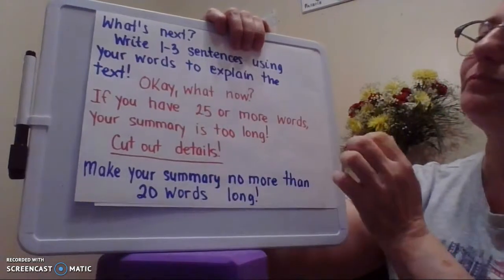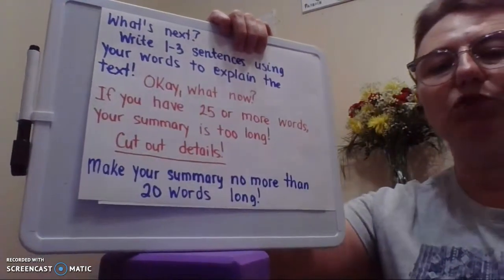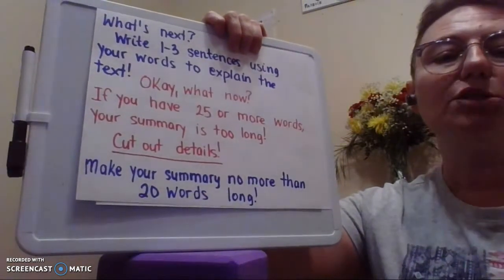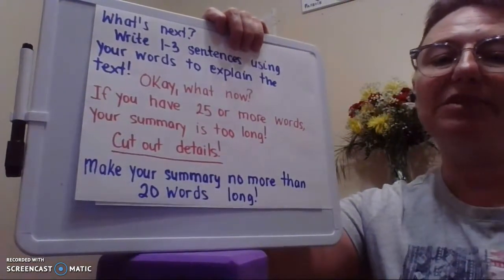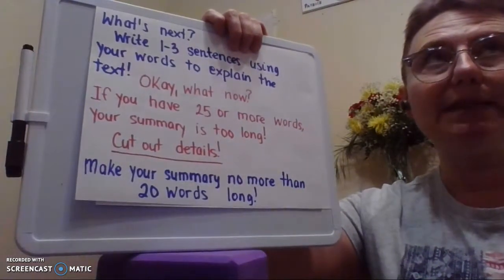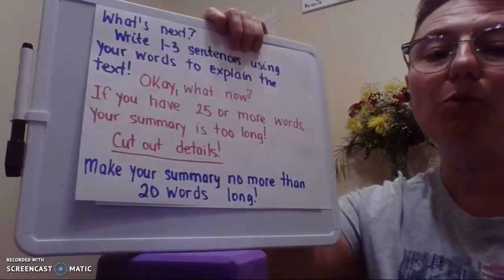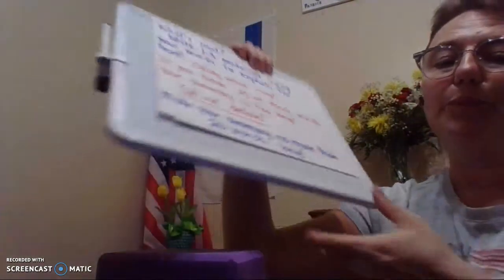Write one, two, three sentences. If you have 25 words or more, your summary is too long. You have to cut out some details - just details, not main stuff. Make your summary no more than 20 words long.